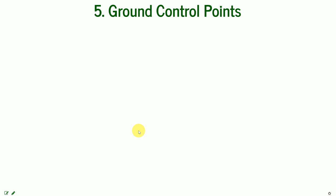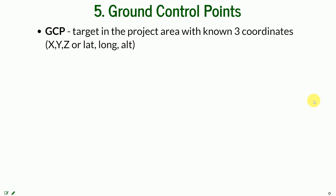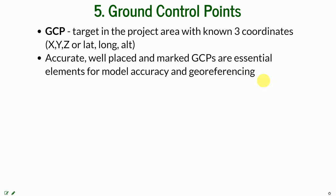That's where the solution comes in: ground control points. These are targets on the ground in the project area for which we have already measured three coordinates — latitude, longitude, and altitude, or X, Y, Z if working in a different coordinate system. They need to be accurate, well-placed, and marked, and they are essential elements for achieving modern accuracy in geo-referencing.